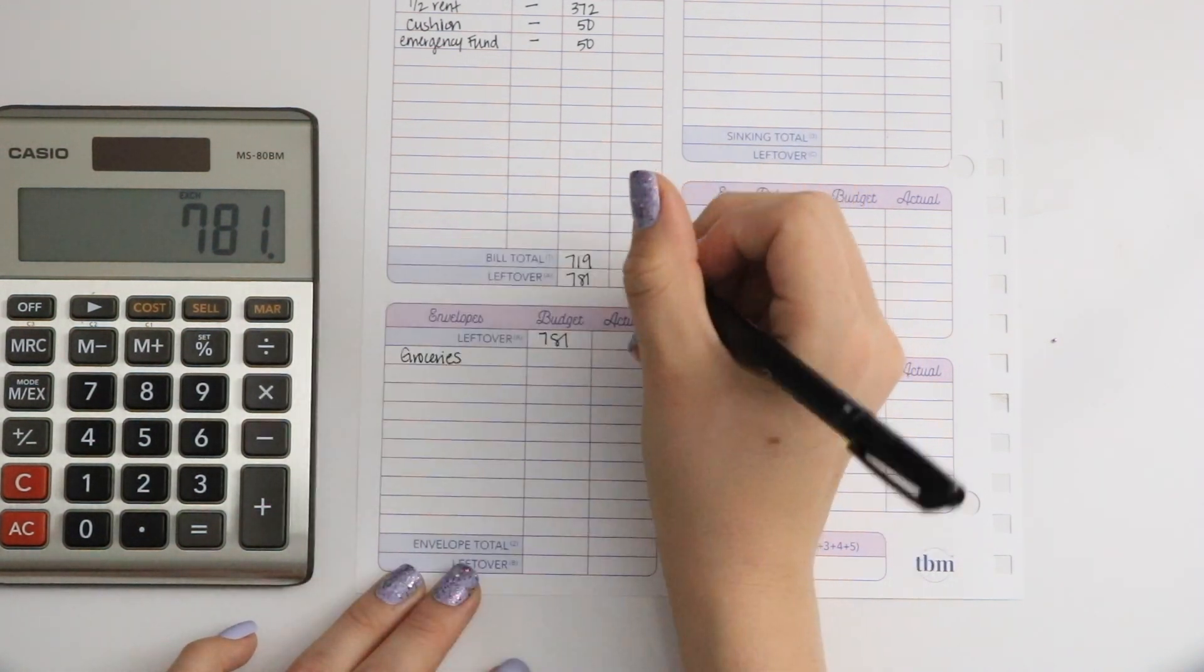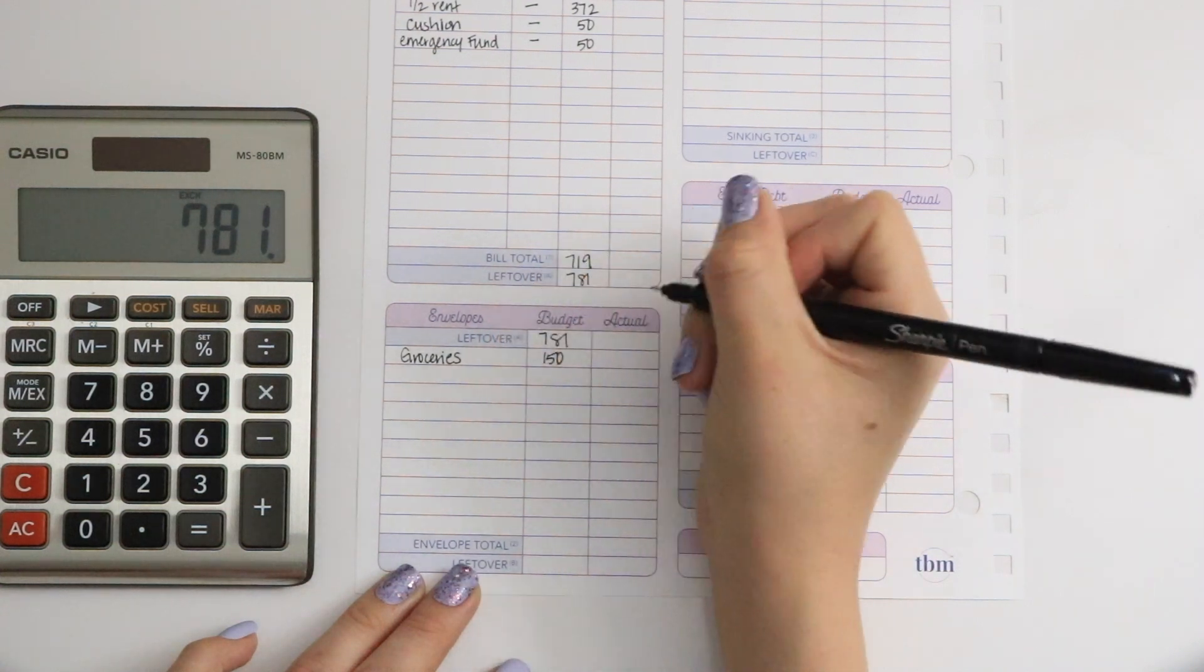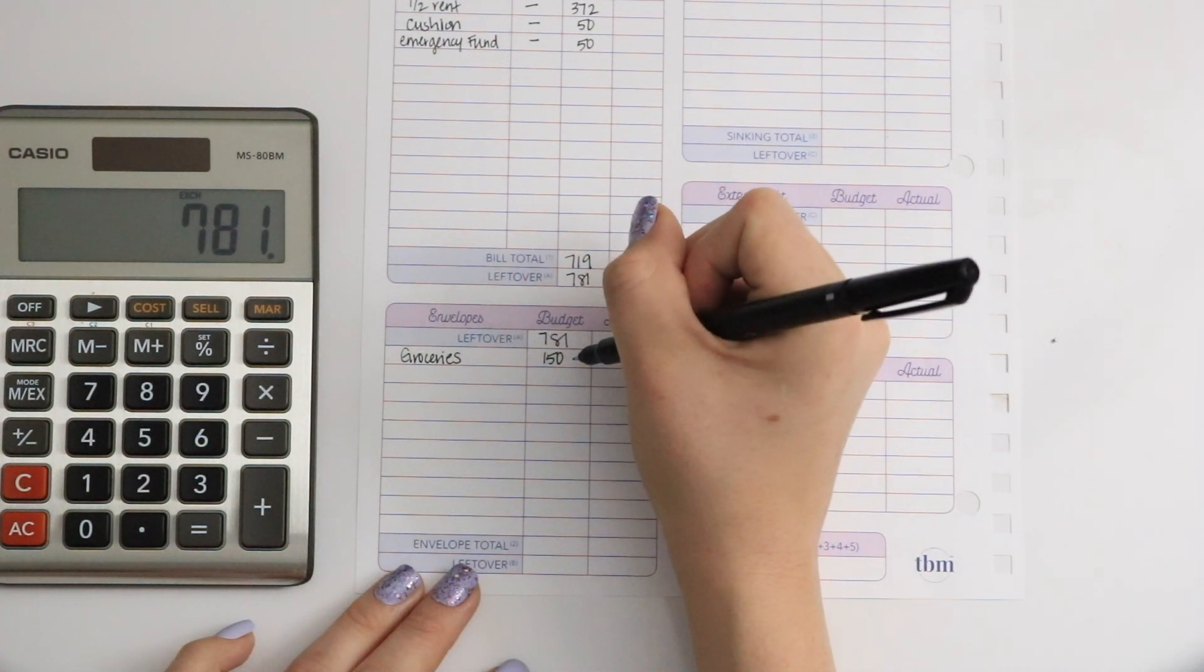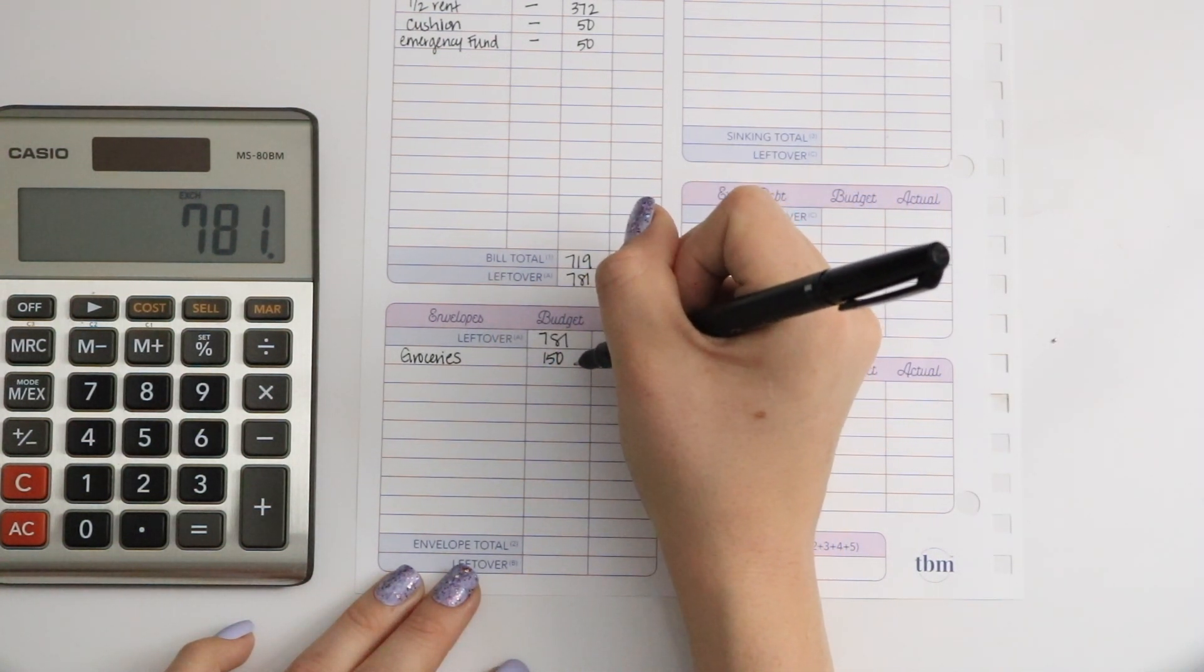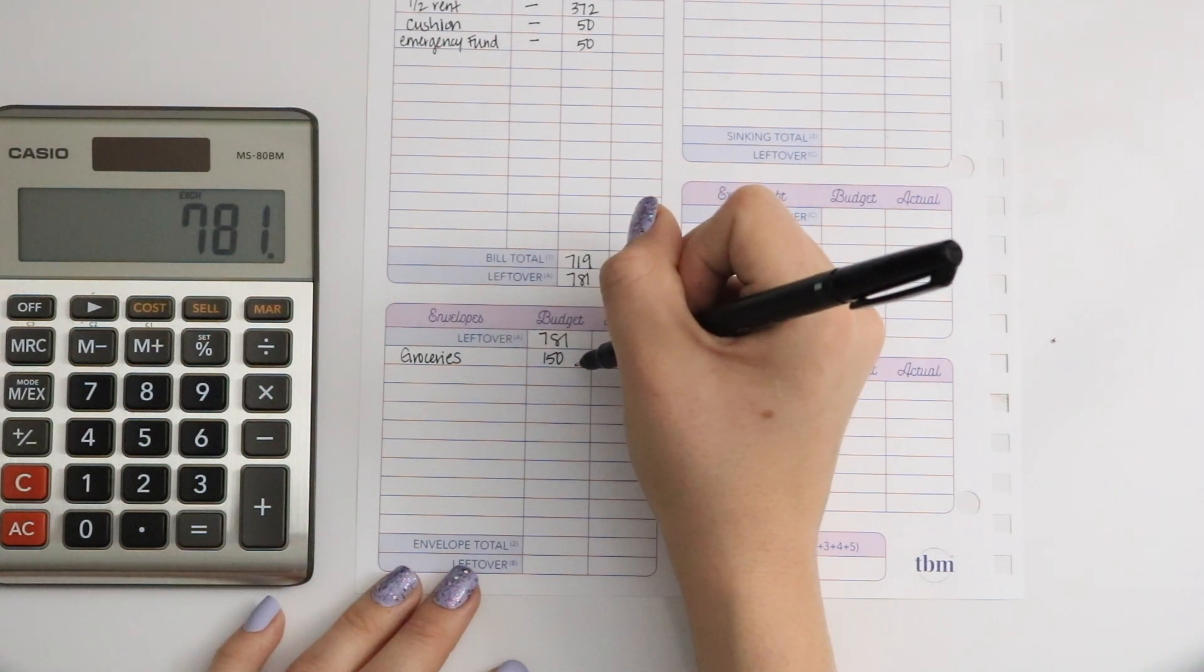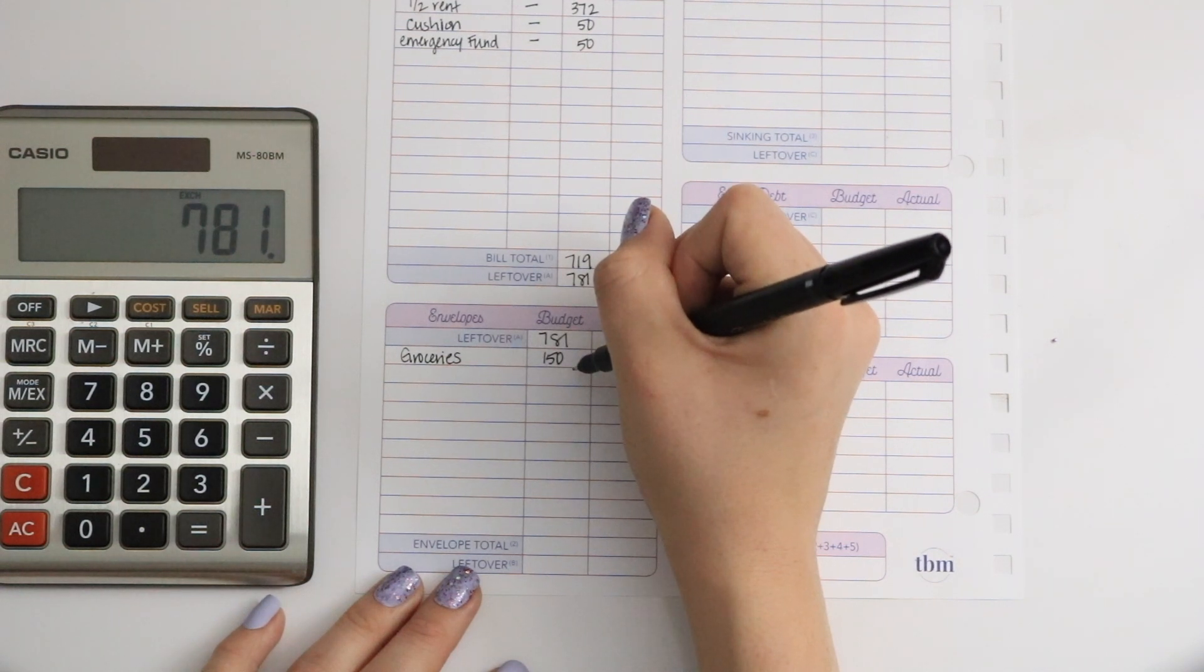We have groceries. I'm doing $150. It's that low because Sandra is going away for work again next week, so it's just me and I don't need that much food.